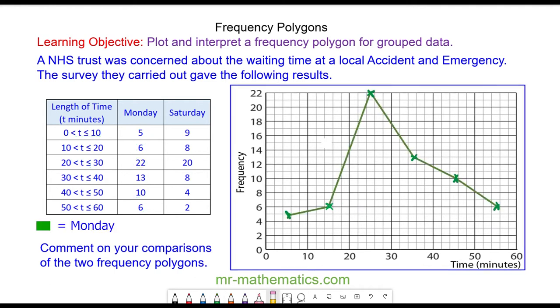Do you want to try and plot the frequency polygon for the waiting time on Saturday? You can pause the video and resume when you're ready. So we're going to plot this frequency of 9 halfway between 0 and 10, which is 5 minutes. The frequency of 8 at 15 minutes. The frequency of 20 at 25 minutes. The 8 at 35, the 4 at 45, and the 2 at 55. Again, we join these points together with straight lines.